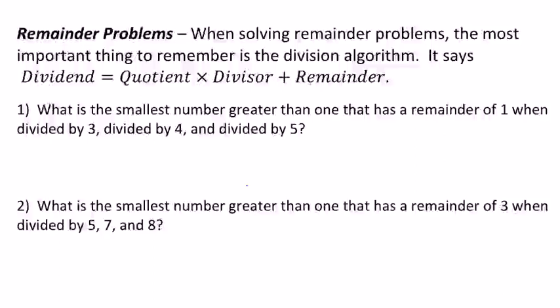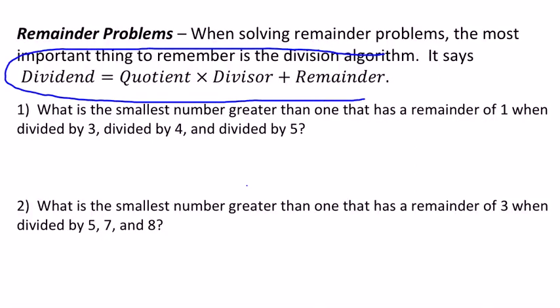Okay, so in this set of problems, it's talking about and gives you information about remainders. When you're doing remainders, the division algorithm, which is this right here, is essential. And that says the dividend, which is the number you're dividing into, so the big number, equals the quotient, which is your answer, times the divisor, which is the number on the outside,